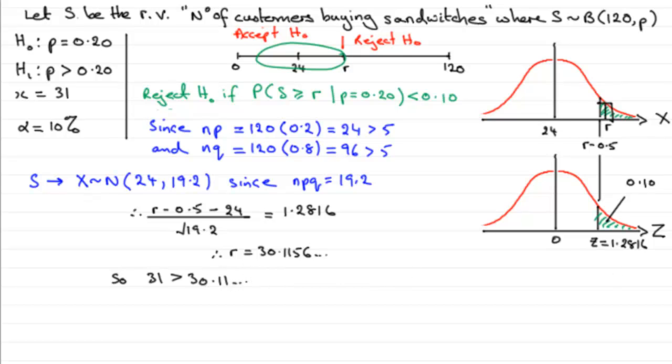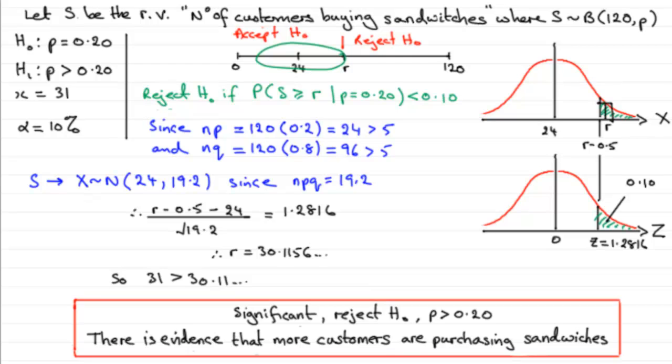So what does this mean? We can conclude we would write something like this: that it's significant, we would reject H₀ in favor of the alternative hypothesis that P was greater than 0.20. So there is evidence that more customers are purchasing sandwiches.